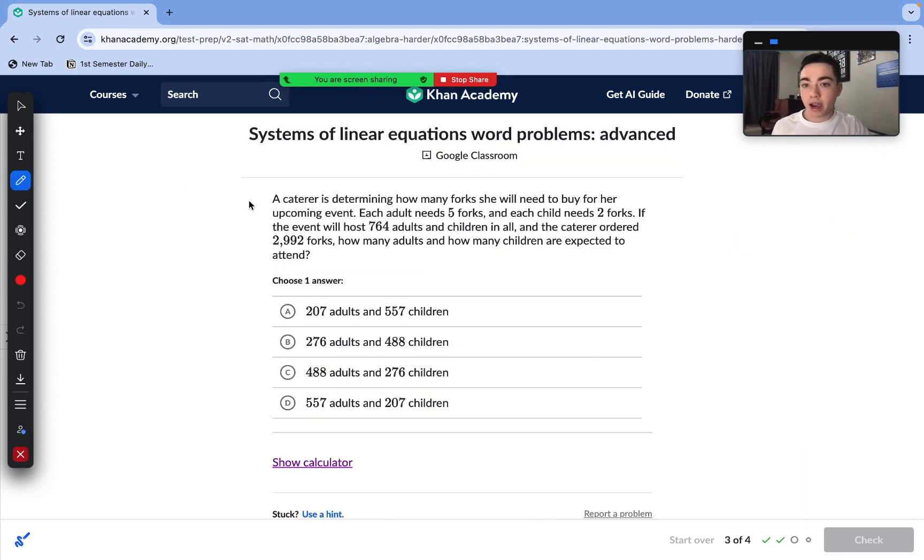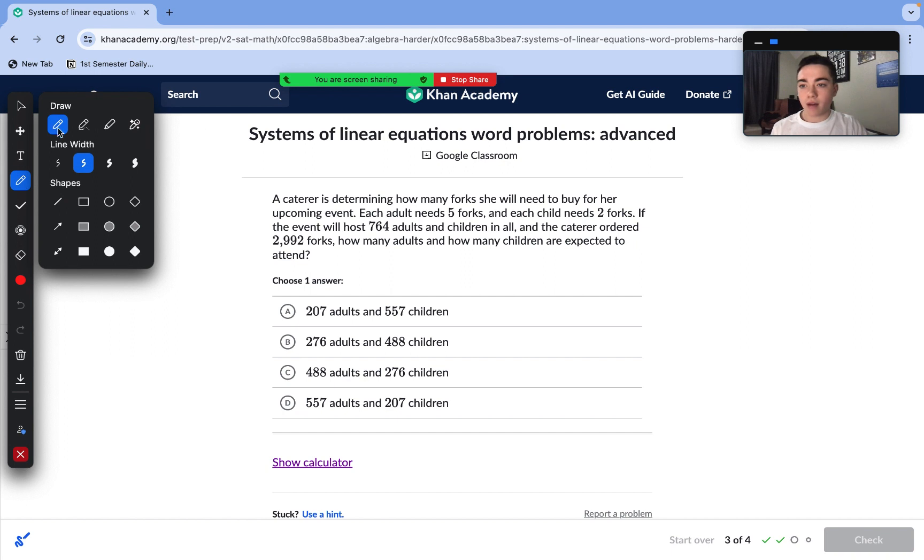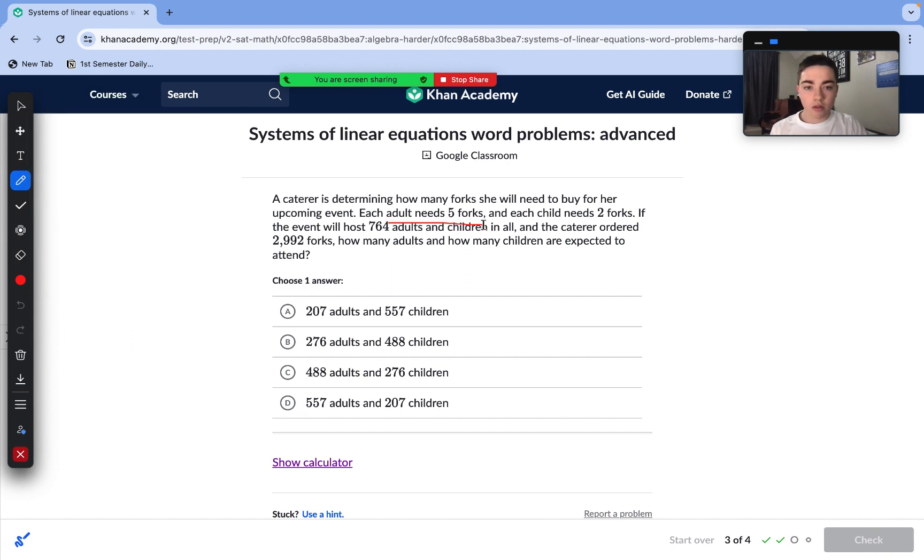On to question number three. A caterer is determining how many forks they will need to buy for an upcoming event. Each adult needs five forks and each child needs two forks. If the event hosts 764 adults and children in all, the caterer ordered 2,992 forks. How many adults and children are expected to attend? This question is extremely similar to question number one. Adults is variable A, children will be variable C.